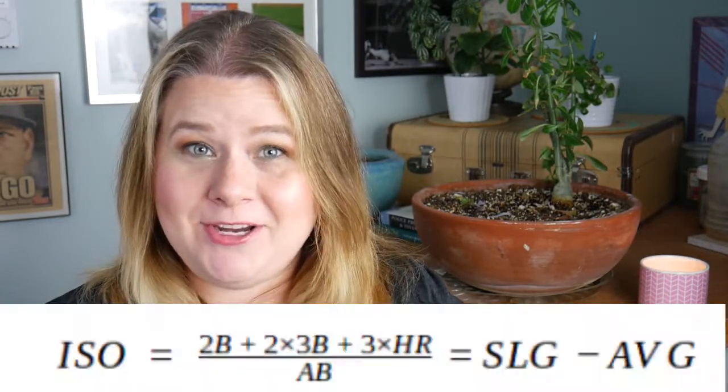Calculating ISO is actually one of the easiest stats to calculate. There are actually three different ways you can calculate ISO. At its most basic, you just take a player's slugging percentage and subtract their batting average. If you are looking for fun calculations, you can use the weighted extra base hit formula that I will put on the screen, or you can just take a player's extra base hits and divide it by their at-bats.